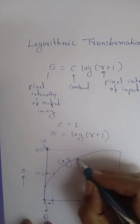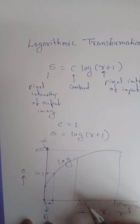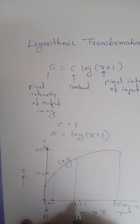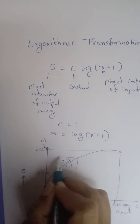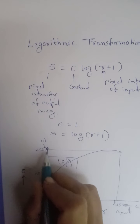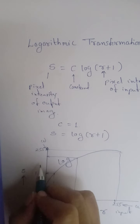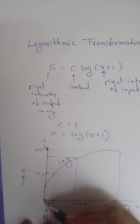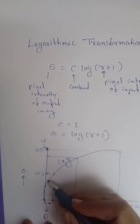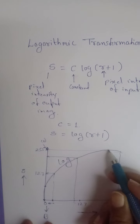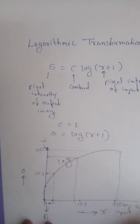Similarly, if the pixel intensity of the input image is close to 127, which is close to gray, the corresponding output image intensity is almost towards white, very close to 255. So you can see that there is an exponential rise in the intensity of images in log transformation.